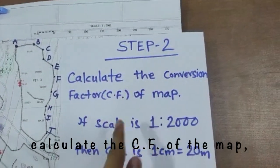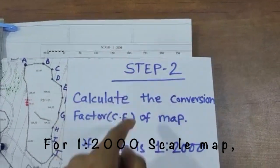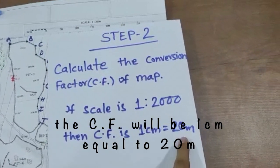the conversion factor of the map by finding the scale of the map. For 1 is to 2000 scale map, the CF will be 1 centimeter equal to 20 meters.